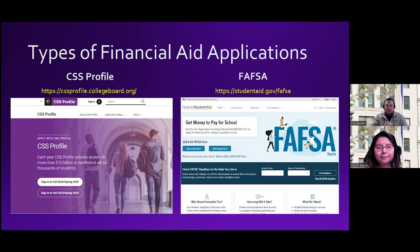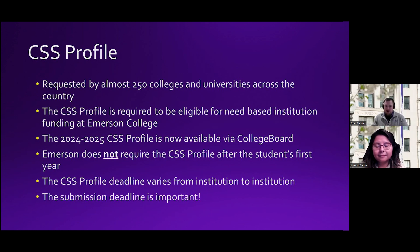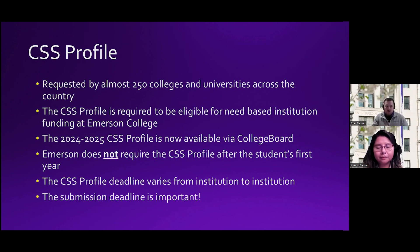The two different types of financial aid applications: the CSS Profile and the FAFSA form. The CSS Profile through the College Board is requested by over 250 colleges and universities across the country. This is used to determine eligibility for need-based institutional aid. Here at Emerson, we must receive your FAFSA and CSS Profile both. The 2024-25 profile became available in October. We do not require a CSS Profile after your first year — in your first year it's FAFSA and CSS Profile; after that, it is just your FAFSA.